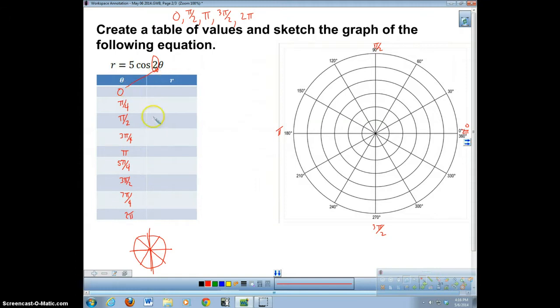We're going to plug in 0 in for theta, and we're going to have 5 cosine of 2 times 0 is 5 cosine of 0. Cosine of 0 is 1, so we're going to get 5. Because we have the point right here is 1, 0 on the unit circle.